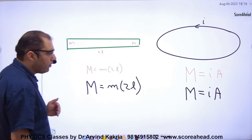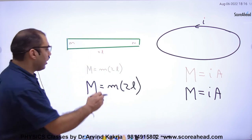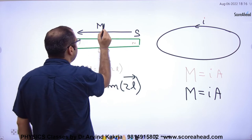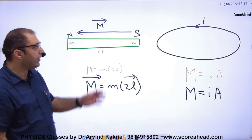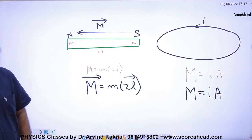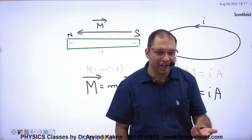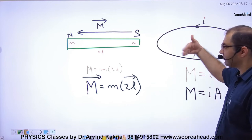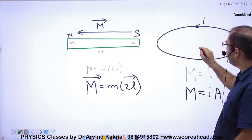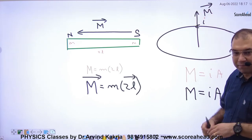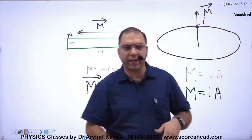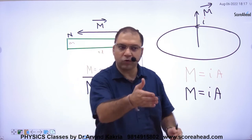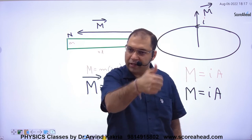Capital M is a vector, so we need its direction. For a bar magnet, capital M points from south to north. For a current-carrying loop, since the poles are not visible, we use the right-hand rule. Curl the four fingers in the direction of the current in the loop; the thumb points in the direction of capital M. This is the same direction as B inside the loop, so B and capital M are in the same direction.